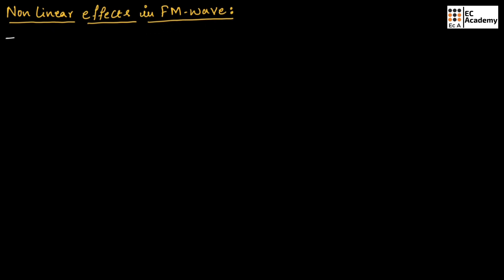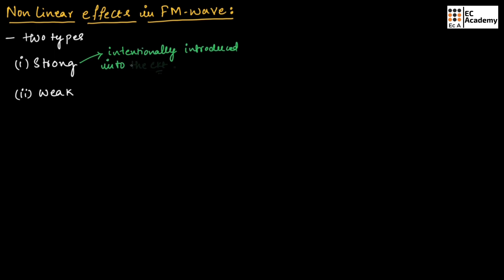The non-linear effect can be of two types. The first one is strong non-linear effect and the second one is weak non-linear effect. The non-linearity is said to be strong if it is intentionally introduced into the circuit in a controlled manner. The non-linearity is said to be weak when it is inherently present in the circuit.